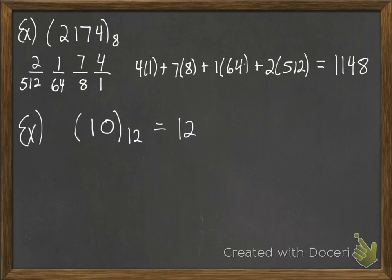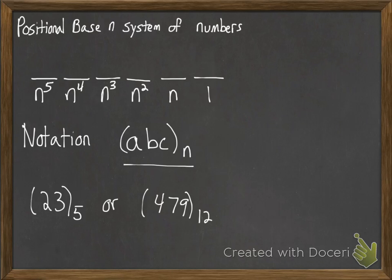What happens in a base n system is you need to have symbols for all the numbers from 1 to n minus 1.